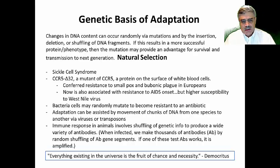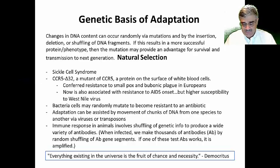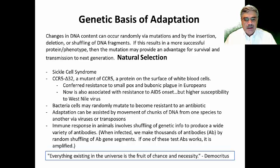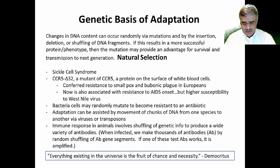Near the top of my list there's something called CCR5 delta 32. It is a protein on the surface of white blood cells. A particular mutant of this protein — the delta 32 mutant — confers resistance to smallpox and bubonic plague. This is thought to be why certain people were immune to the bubonic plague back in the 14th century, because they had this particular mutant of this protein.